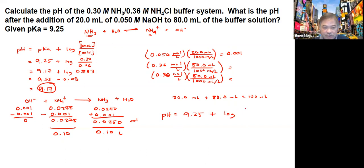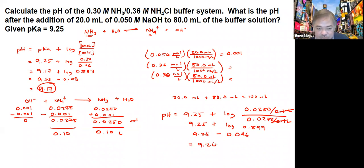You have the base, which is 0.0250 divided by 0.1, over 0.0278 divided by 0.1. As you can see, you can just cancel out. This is now equals to log 0.899. If you get the value of that, that is equivalent to negative 0.046. If you put it with 9.25, you will get around a number that is 9.20.